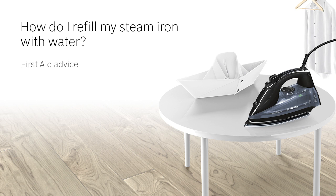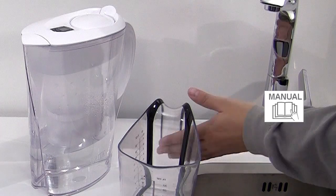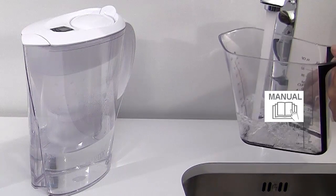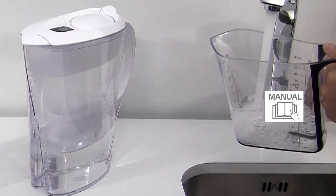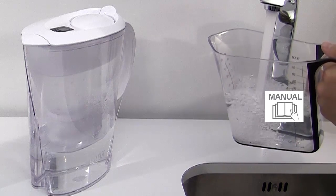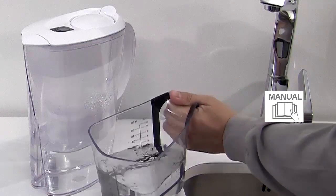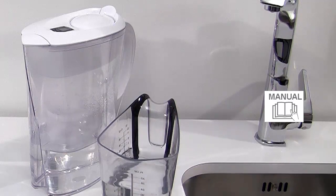How do I refill my steam iron with water? When filling up your steam iron, firstly pour tap water into a jug. In hard water areas we would recommend using 50% distilled or deionized water to avoid limescale build up inside the iron.